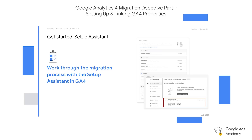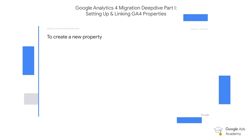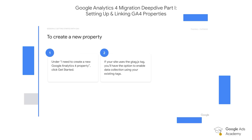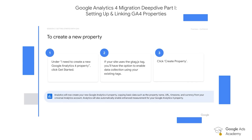We can start by making sure that our GA4 property is going to be linked to the Universal Analytics property. To create a new property, within the Setup Assistant, click Get Started. If your site uses the gtag.js tag, you'll have the option to enable data collection using your existing tags — we recommend this if you want to benefit from new features like Predictive Audiences. And then importantly, click Create Property.